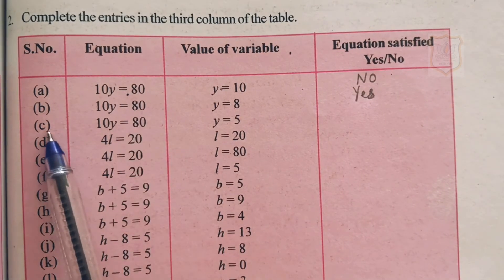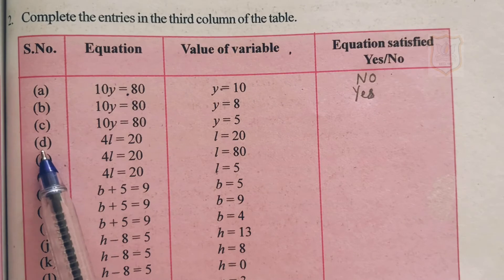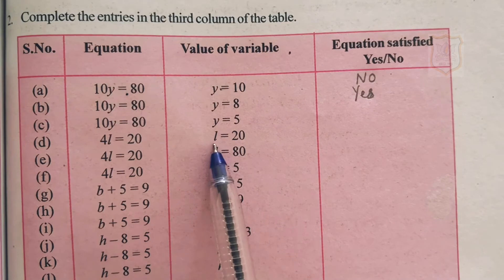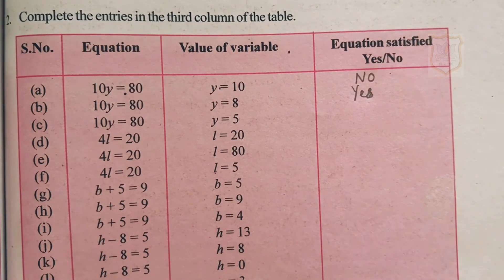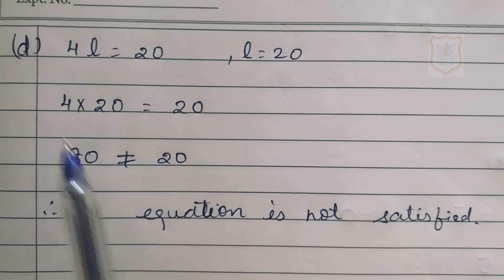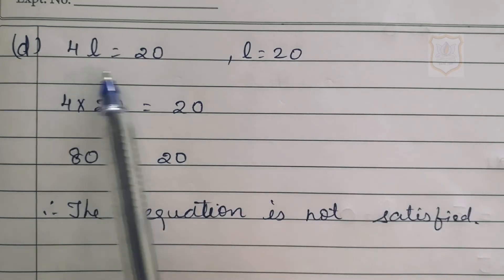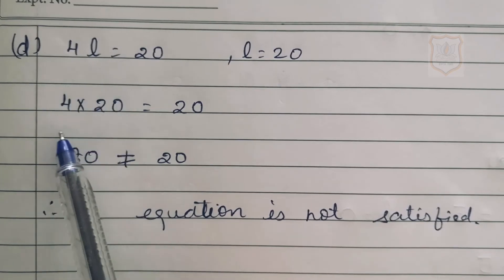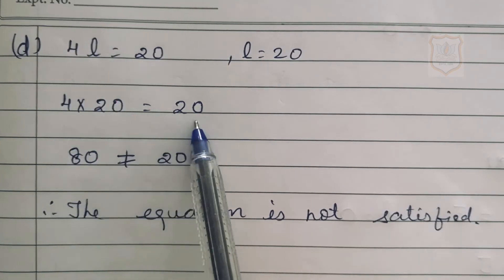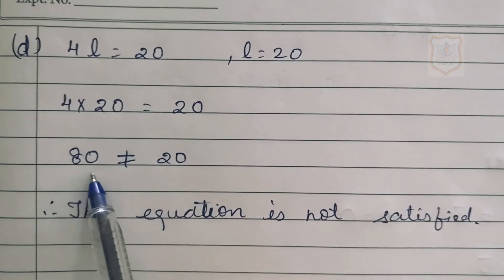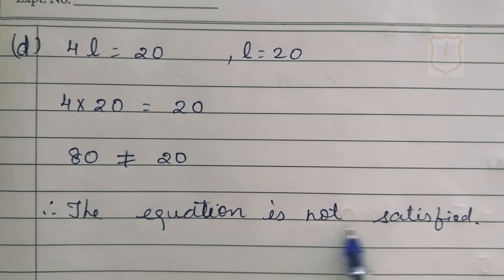Part C of question number 2 you have to do by yourself. Part D: 4L equals 20, where the value of variable L is 20. We substitute 20 in place of L, so 4 multiplied by 20 equals 20. But 4 times 20 is 80, and 80 is not equal to 20. Therefore, the equation is not satisfied. If the value of L is 20, then 4L equals 20 is not satisfied — answer is no.